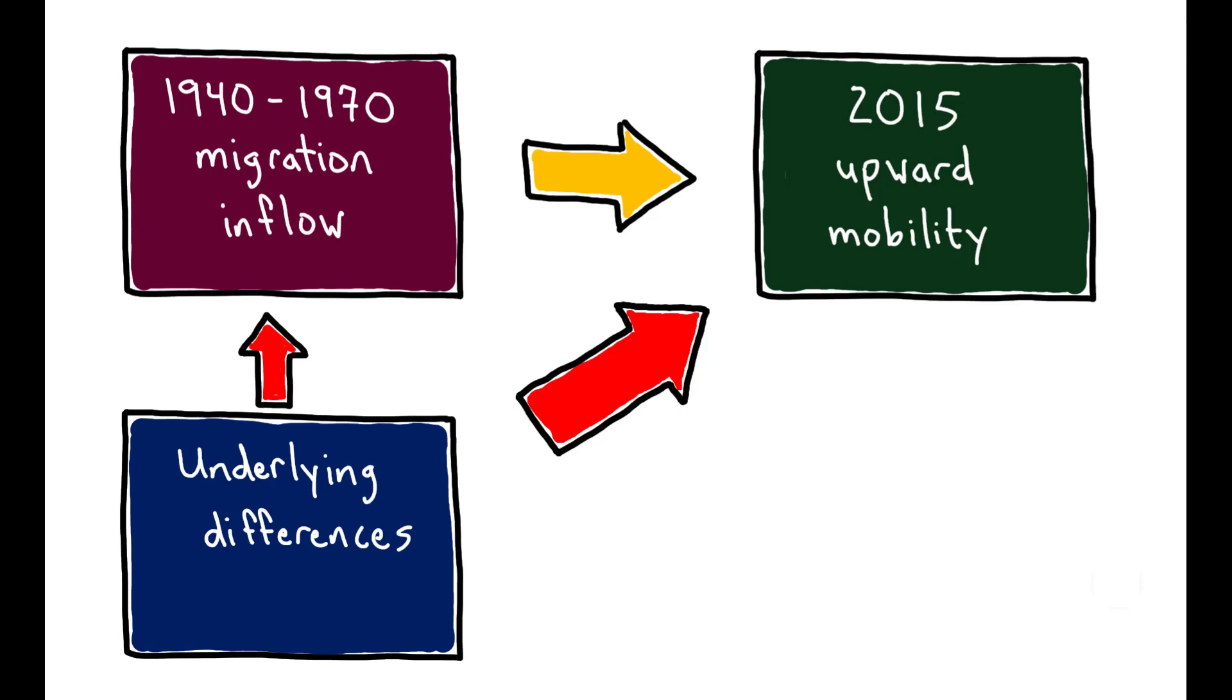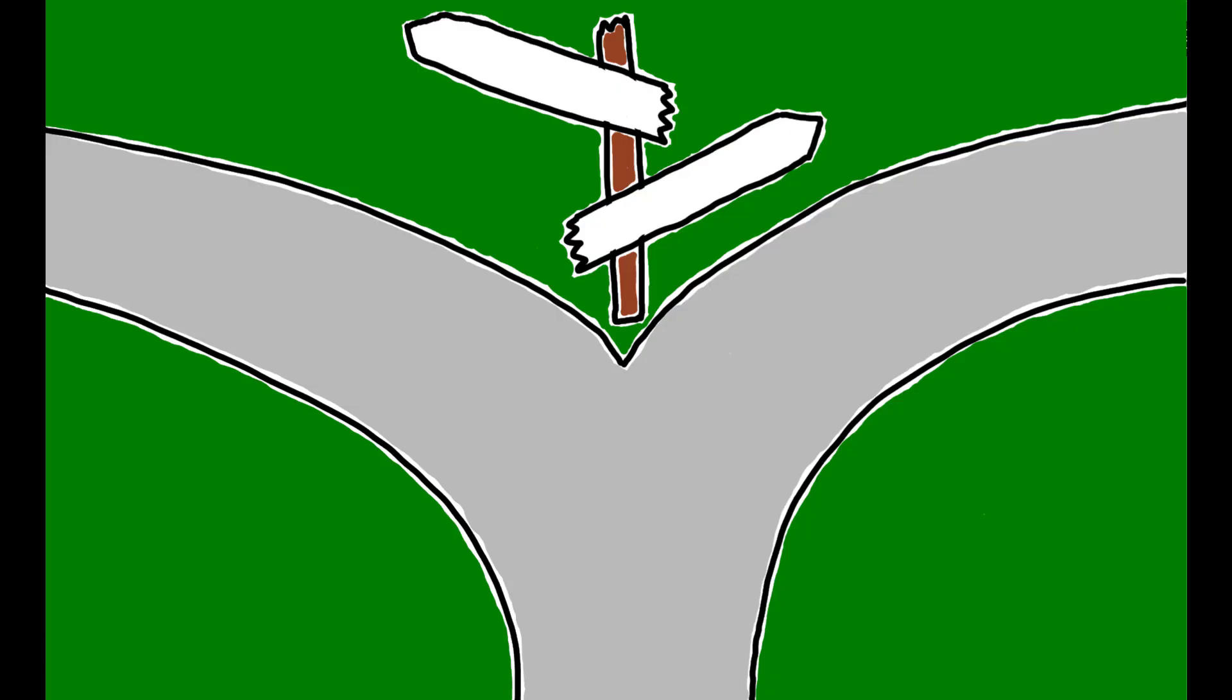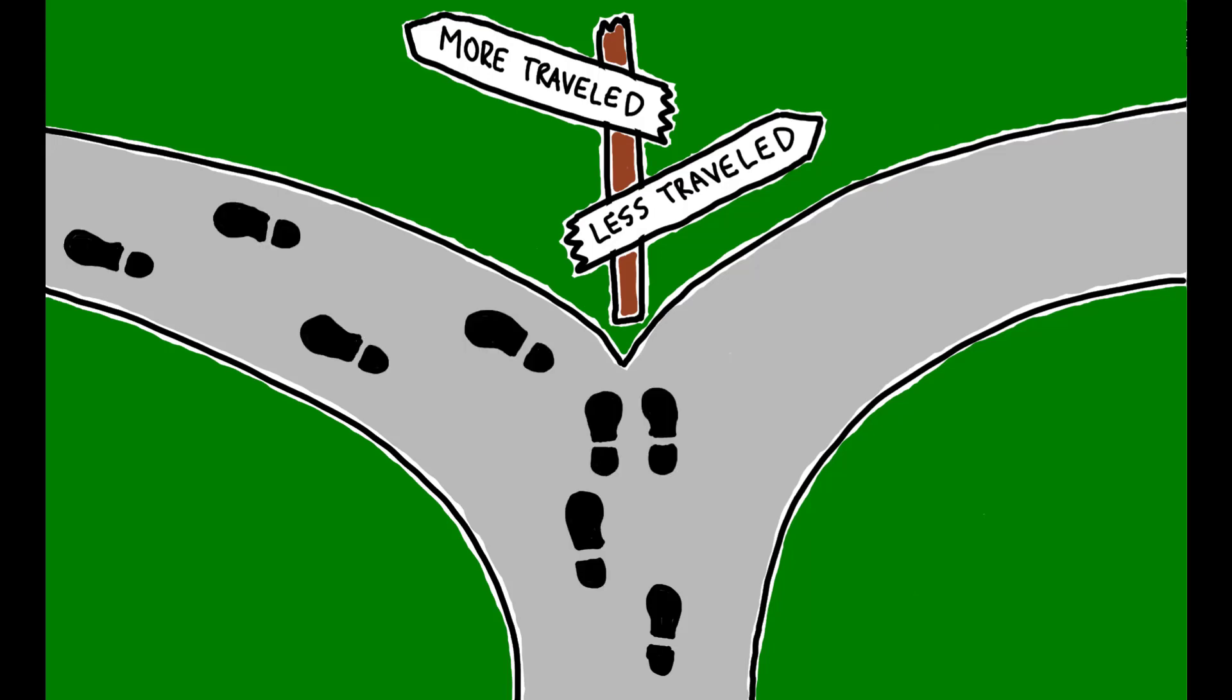To overcome this obstacle, the author employs what is known as a shift-share strategy. In particular, she exploits the fact that, conditional on deciding to leave the south, black migrants tended to move where previous migrants from their communities had settled.